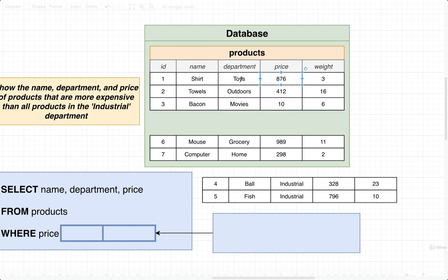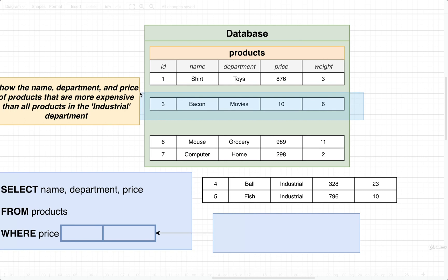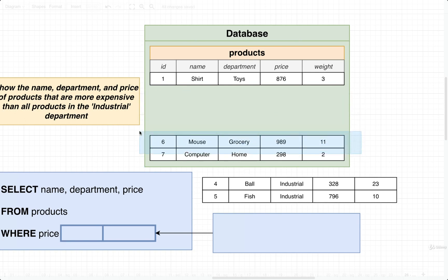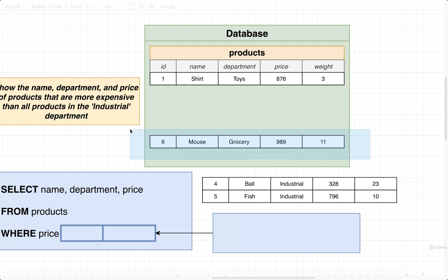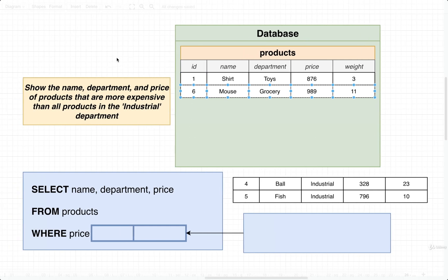The first product has a price of 876 — that is definitely greater than both 796 and 328, so it would stick around. The second has a price of 412, which is not greater than all those values, so we'd dump that. The next has a price of 10, definitely less than the industrial products, so we'd lose that. The next has a price of 989, greater than both, so it stays. Finally, 298 is less, so we'd dump it. We're left with just two rows, showing only name, department, and price.